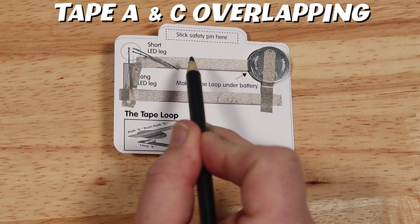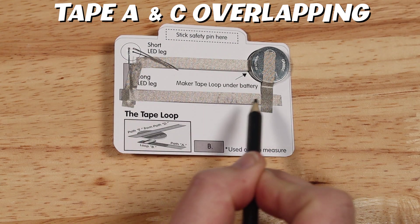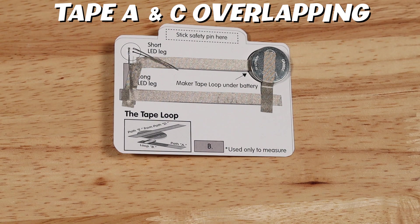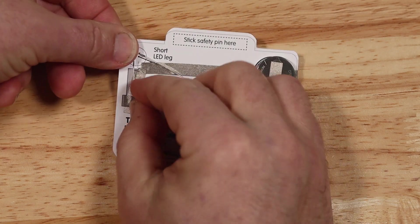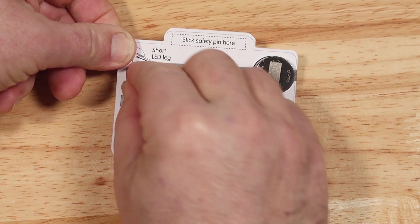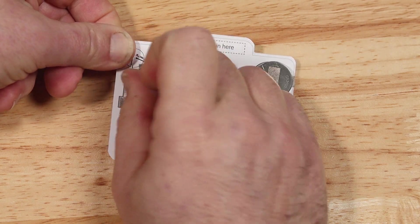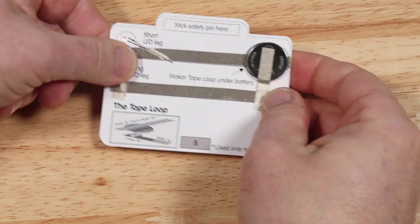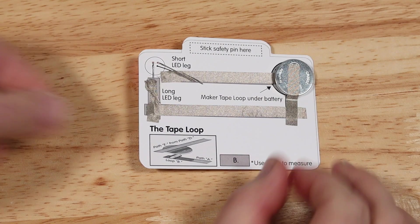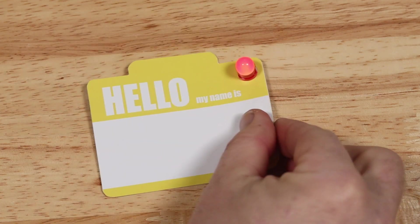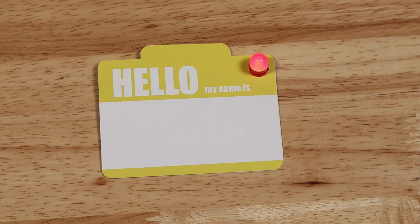And that bypasses power from the battery and makes a short circuit. It actually skips the LED. So what we need to do here is peel back one of those pieces of maker tape so it doesn't touch the other. So the current can flow from the battery, through the LED, and back, complete the circuit, and light up the LED.